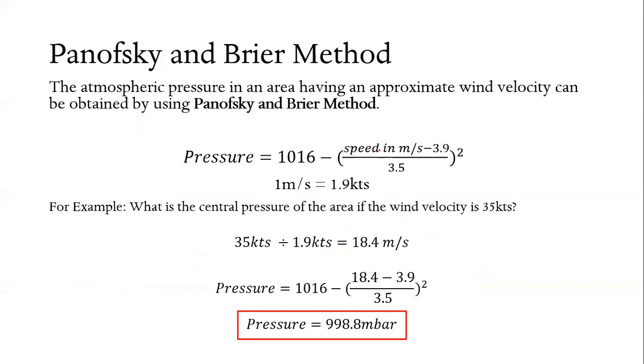We have to use the formula for that. Pressure equals 1016 minus the quantity speed in meter per second minus 3.9 all over 3.5, raised to the power of 2, using the same conversion factor of meter per second to knots.